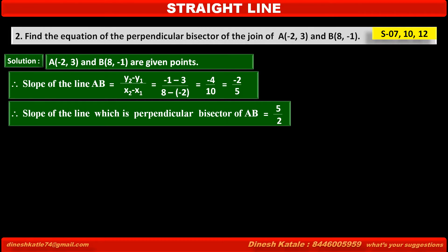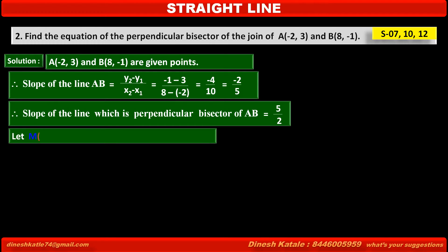This means if the lines are perpendicular, then their slopes are reciprocals of each other with opposite sign. Since the slope of line AB is -2 upon 5, slope of its perpendicular is its reciprocal 5 upon 2 with opposite sign positive. Let the point M(x,y) be the midpoint of AB.